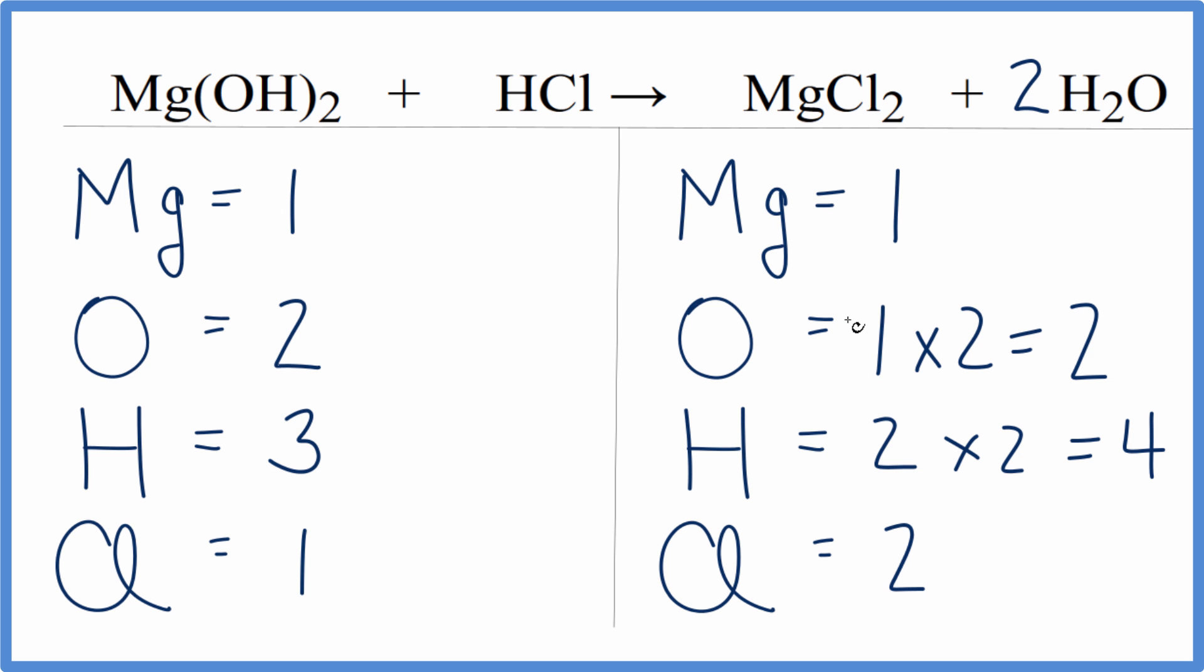Magnesiums and oxygens are balanced. Let's fix the chlorines. We have 2 chlorines here. If we put a 2 in front of HCl, 1 times 2 gives us 2 chlorine atoms.